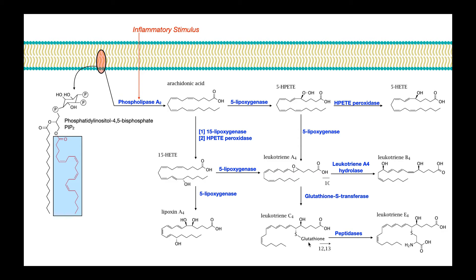Glutathione is a tripeptide, so peptidases can clip certain portions of the amino acids off. This leaves cysteine — which is a component of glutathione — as the only remaining amino acid. The other two components are glycine and glutamate. The peptidases clip the glycine off and clip the glutamate off, leaving just the central cysteine, which is characteristic of leukotriene E4. Notice this network of three conjugated double bonds — thus the name leukotriene.